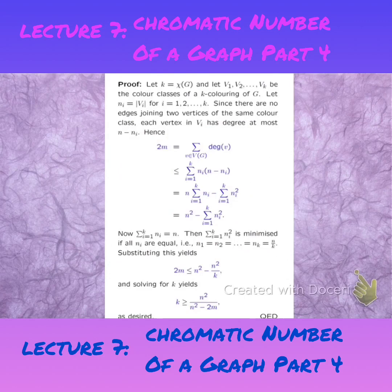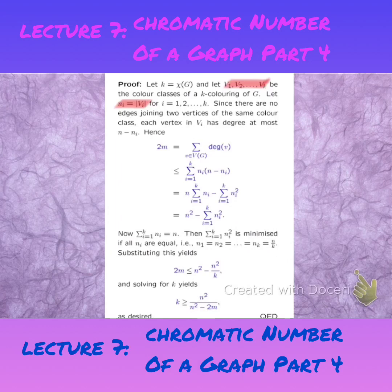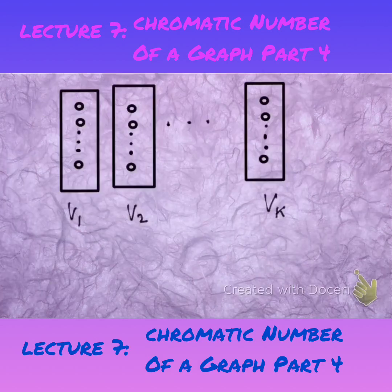To see this result is not difficult. You take a K-coloring of the graph G, and you let V1 up until VK be your color classes. These sets V are all independent sets. You let NI denote the number — the cardinality or the number of vertices — in each VI. There are no edges between vertices in VI because it is independent. You only have edges between these sets VI: V1, V2 up until VK.